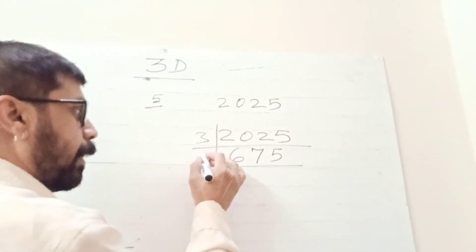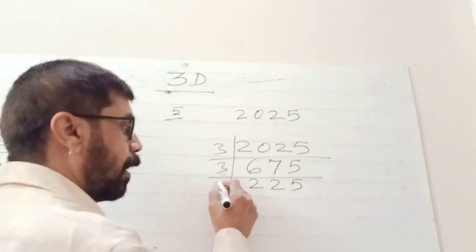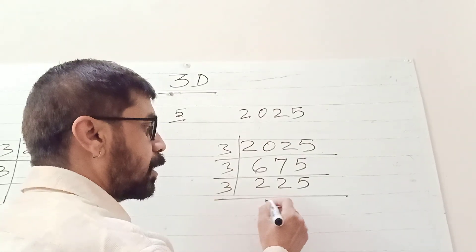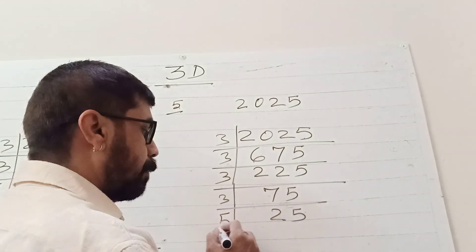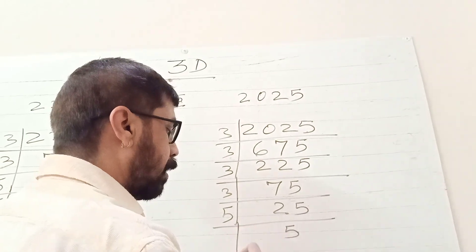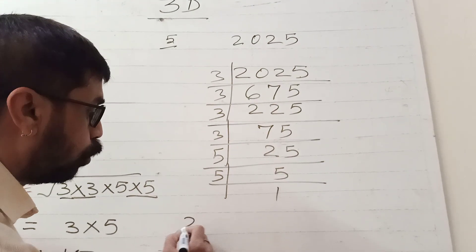Again by 3: 3 goes into 225 to get 75. Again by 3: 3 goes into 75 to get 25. Then by 5: 5 goes into 25 to get 5, and 5 goes into 5 to get 1.